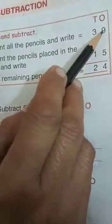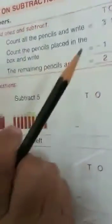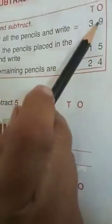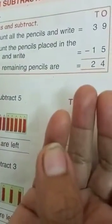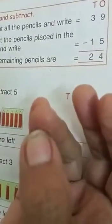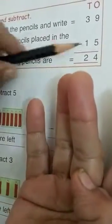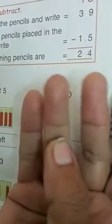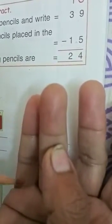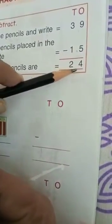Clear? Now 9 minus 5. You are all grown up and going to second class, so no one will draw lines — you will subtract on your fingers. Count 9 on fingers, then take away 5 by going back. How many numbers are left? 4. So 4 is written here. Like this, 3 minus 1 is 2. The answer is 24.